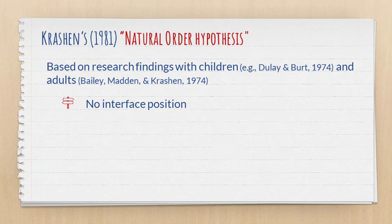Let's remember what we unpacked in a previous video: Krashen is in the no-interface camp when it comes to explicit and implicit knowledge. So to him, explicit learning leads only to explicit knowledge, and therefore it doesn't change the order or the speed of acquisition, which is implicit.